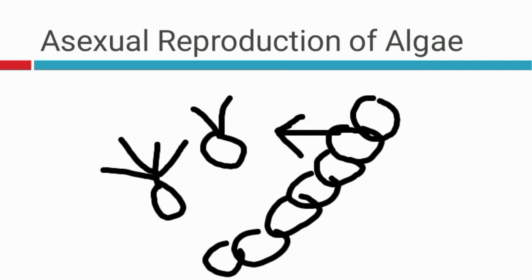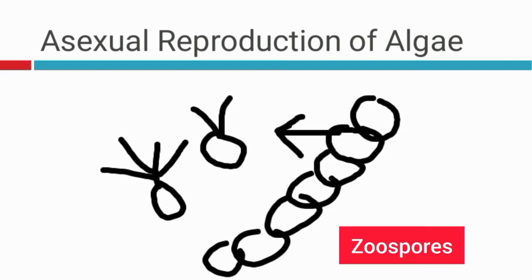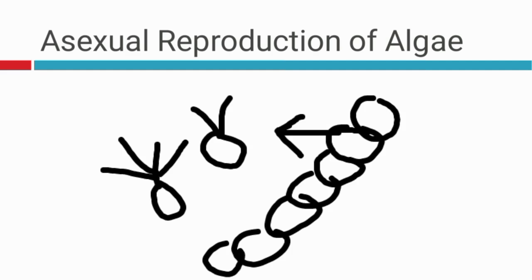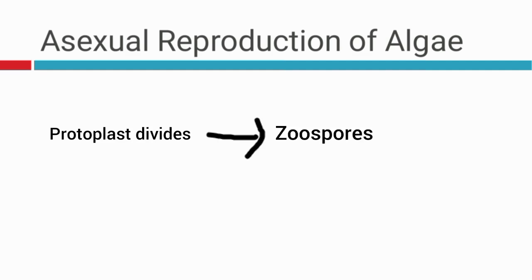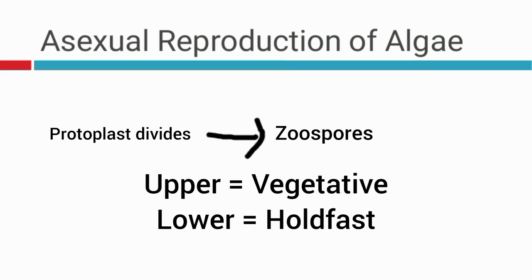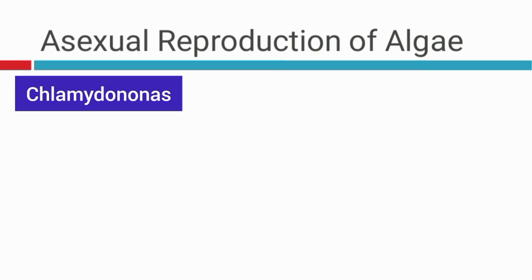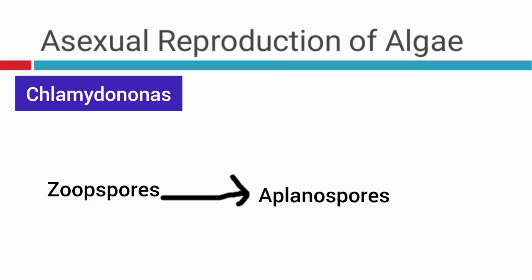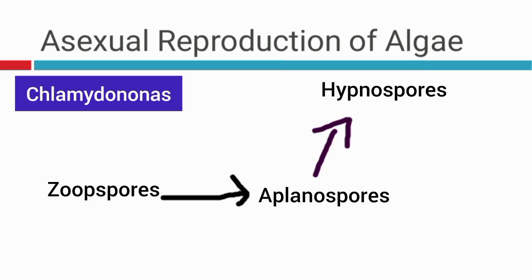Akinetes are basically thick-walled spores that were developed from the accumulation of food materials. Algae can also reproduce through zoospores. Zoospores are motile spores. This occurs in the Ulothrix. Normally, the protoplasts would divide to form the zoospores. The zoospores have two to four flagella. Each of these zoospores can be differentiated into the upper part and the lower part. The upper cell is called the vegetative part, and the lower cell is called the holdfast.